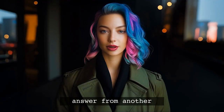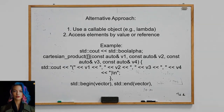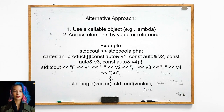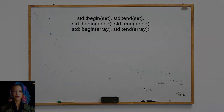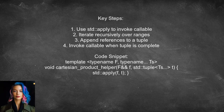Another alternative solution uses a callable object, like a lambda function, to access elements from input ranges defined by iterators. This approach allows for a more natural, STL-style syntax. The implementation uses C++17's std::apply to invoke the callable with collected references from the iterators. The function iterates recursively over the ranges, appending references to a tuple until all items are collected, at which point the callable is executed.